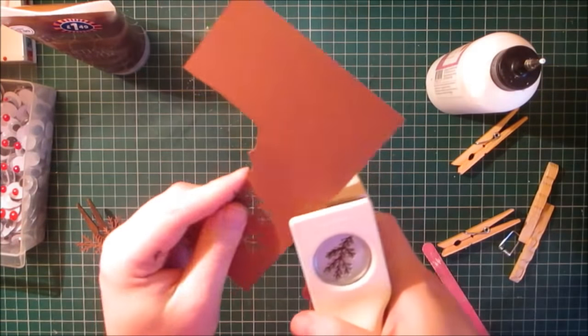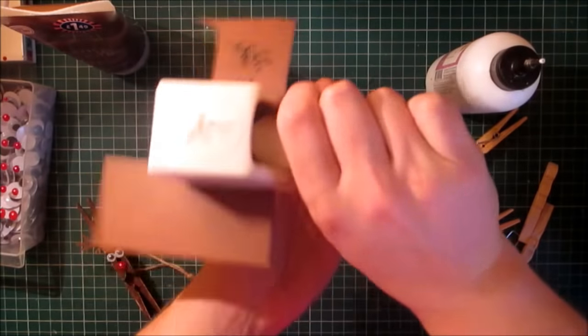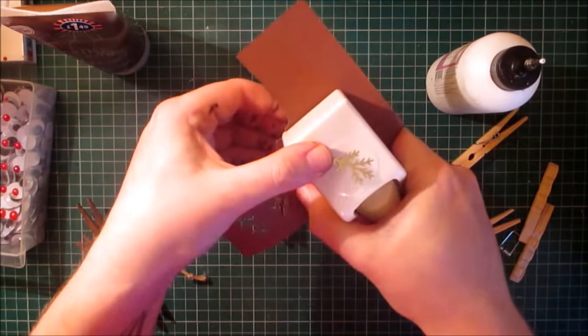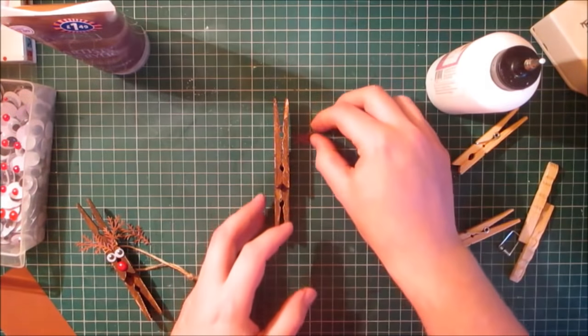So using a bit of scrap, I'm going to punch out one and turn it over and punch a second, and they will give me my antlers.